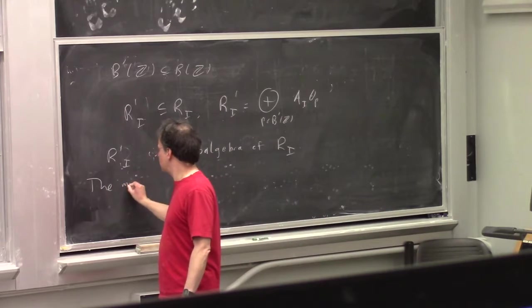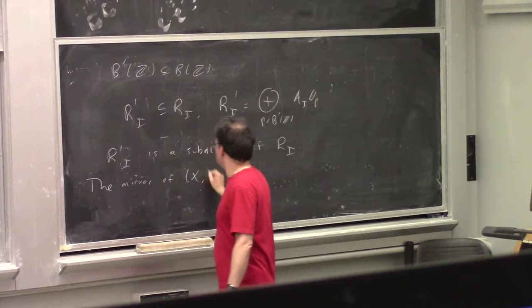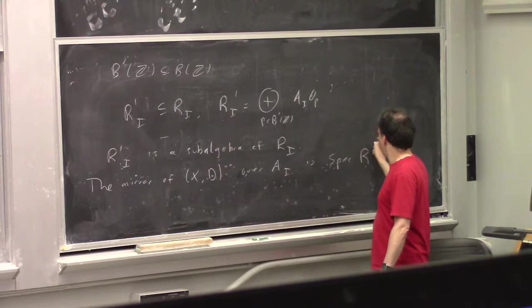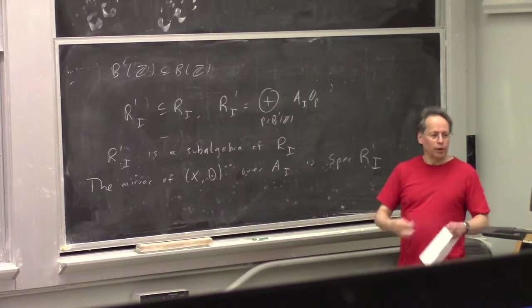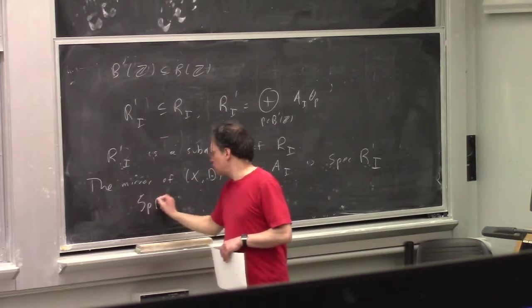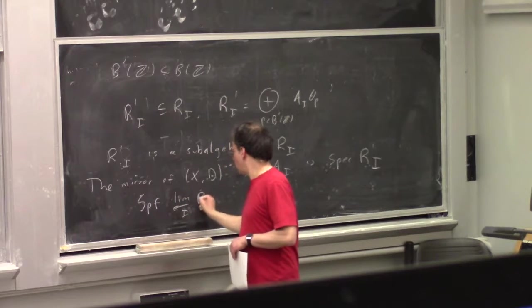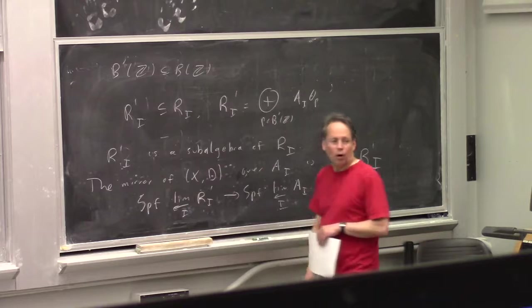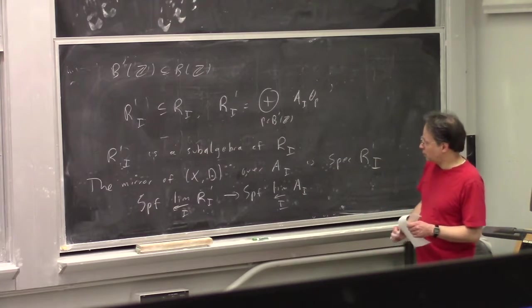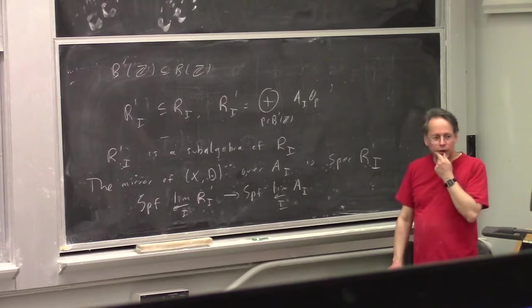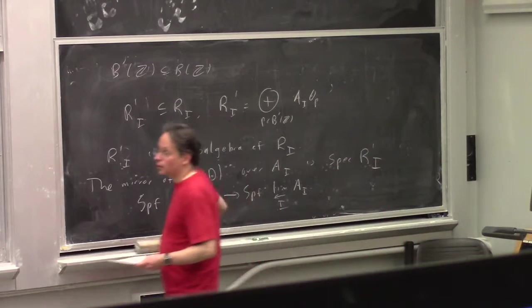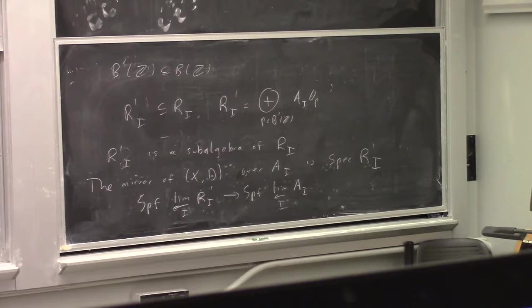So we define d_prime, a subset of B, of the rays corresponding to divisors D_i with a_i being 0. So we just take that set of rays, the subset of rays with the a_i's being 0, and then take all of the cones spanned by those rays. Of course, this now gives you a submodule.